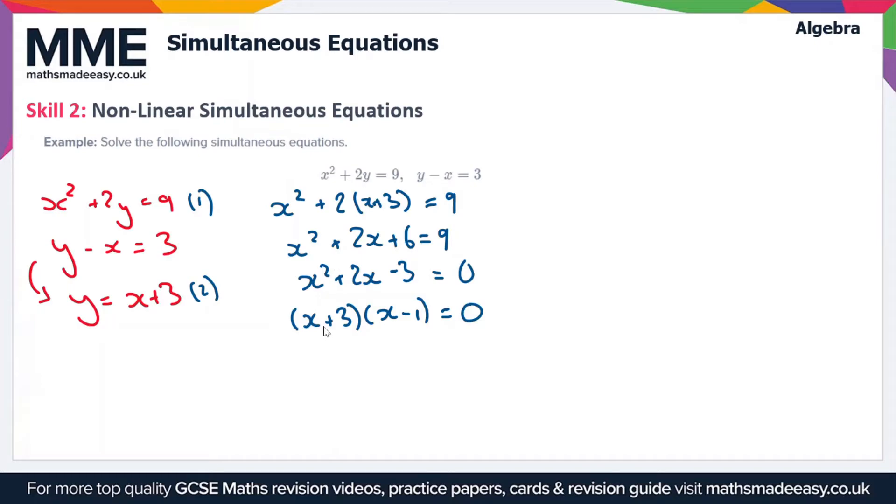This gives us two solutions for x. Our first solution is x = -3. If this bracket equals 0, then x must equal -3. The other solution is x = 1, which is when the other bracket equals 0. So these are our two solutions for x.